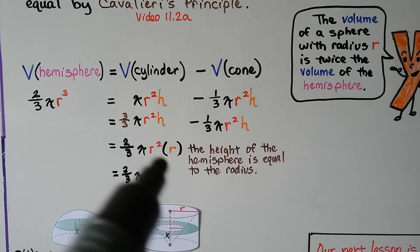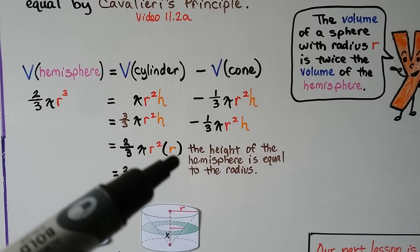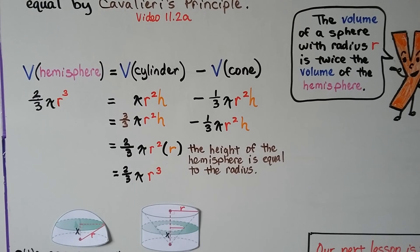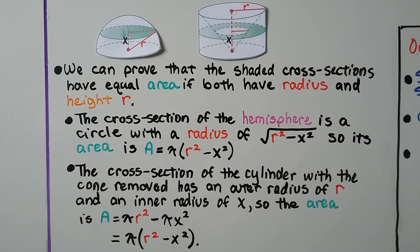And the height of the hemisphere is equal to the radius. So, we can say instead of h, we can put an r there, and that's our r cubed.